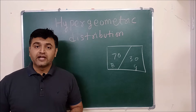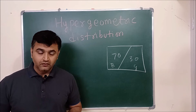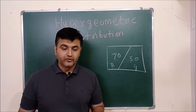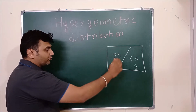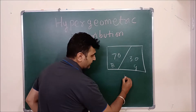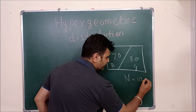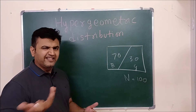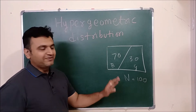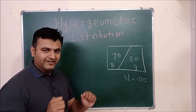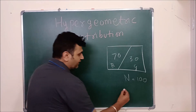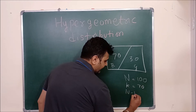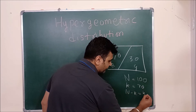But in general, such a thing may not happen. Let's try to understand it by an example. Suppose you have a total population — let me call it capital N — of 100 students. So this is my classroom. In my classroom there are 100 students, 70 boys and 30 girls.